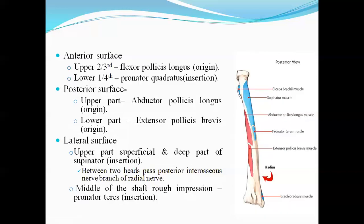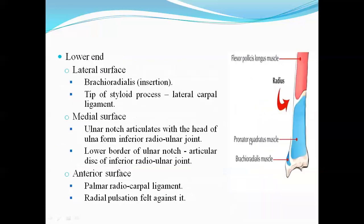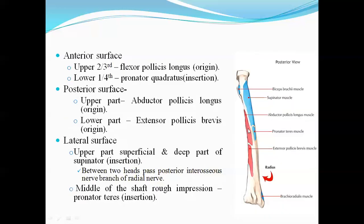On the posterior surface, the middle part has the abductor pollicis longus and extensor pollicis brevis. Abductor pollicis longus abducts the thumb, and extensor pollicis brevis extends the thumb — both are short muscles of the thumb.